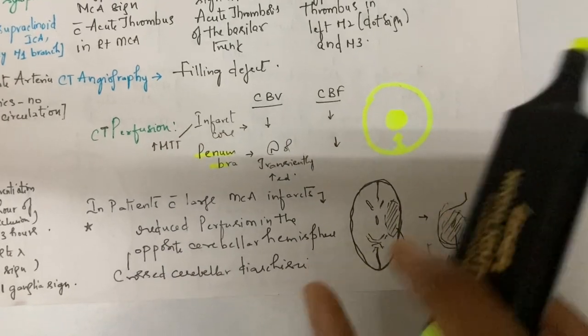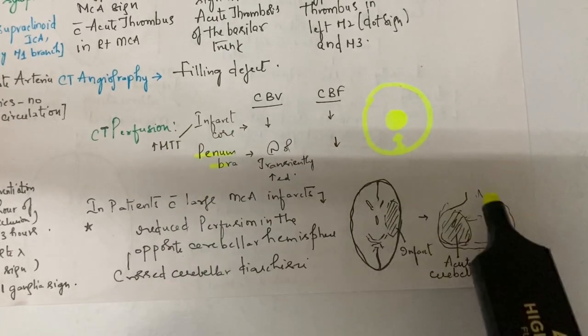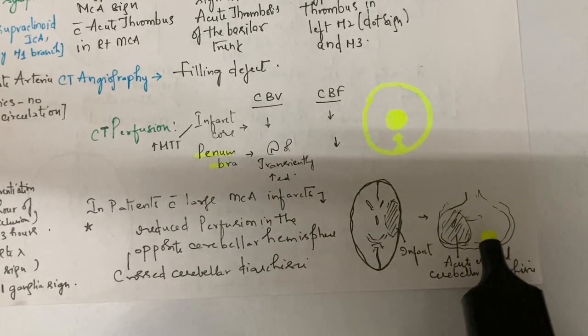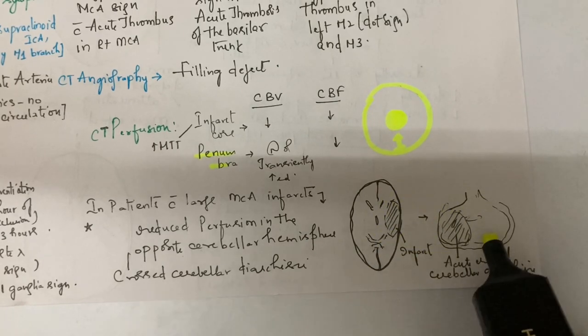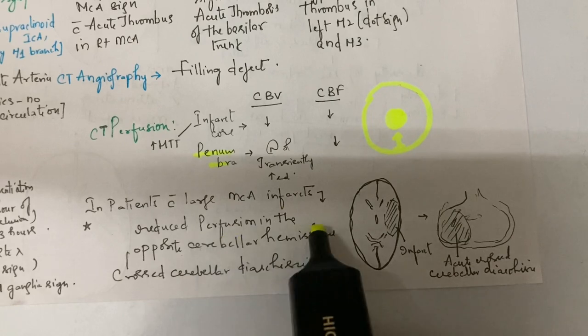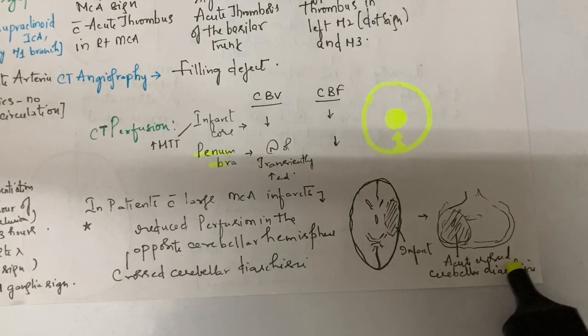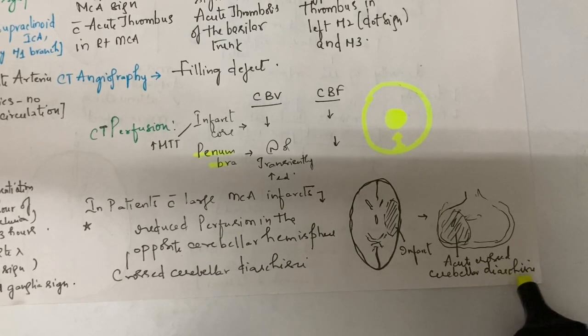One more finding: see the cerebellum opposite to the infarct. Sometimes in large MCA infarct, there is reduced perfusion in the opposite cerebellar hemisphere. This is called acute crossed cerebellar diaschisis.